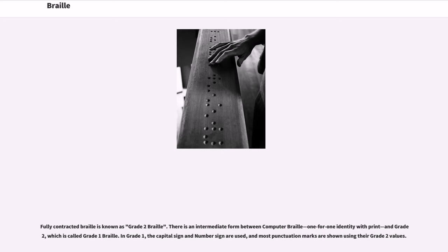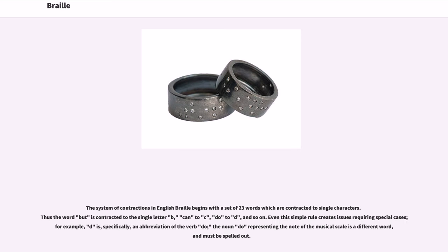Fully contracted Braille is known as Grade 2 Braille. There is an intermediate form between computer Braille — one-for-one identity with print — and Grade 2, which is called Grade 1 Braille. In Grade 1, the capital sign and number sign are used, and most punctuation marks are shown using their Grade 2 values. The system of contractions in English Braille begins with a set of 23 words which are contracted to single characters; thus the word BUT is contracted to the single letter B, CAN to C, DO to D, and so on.